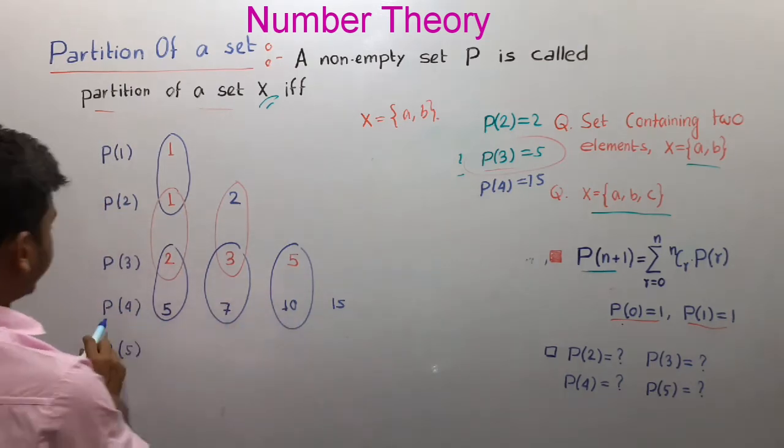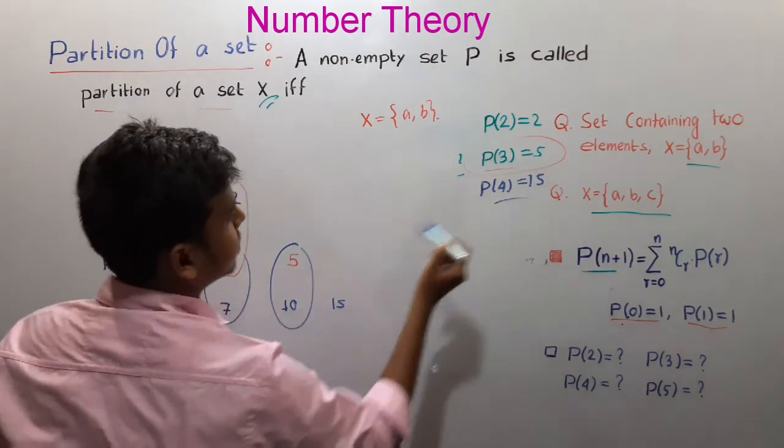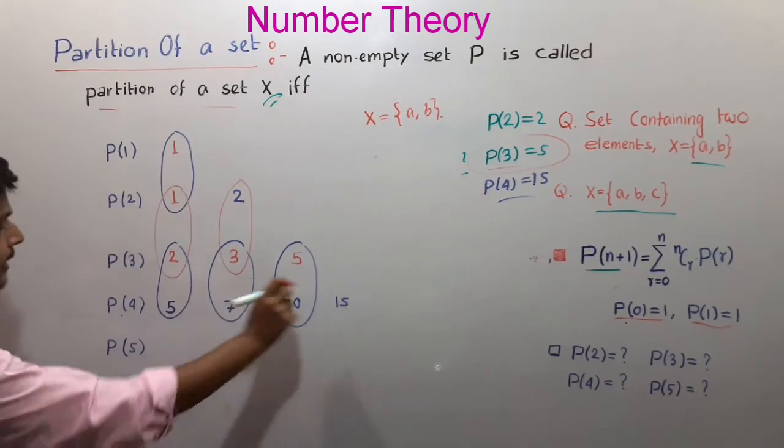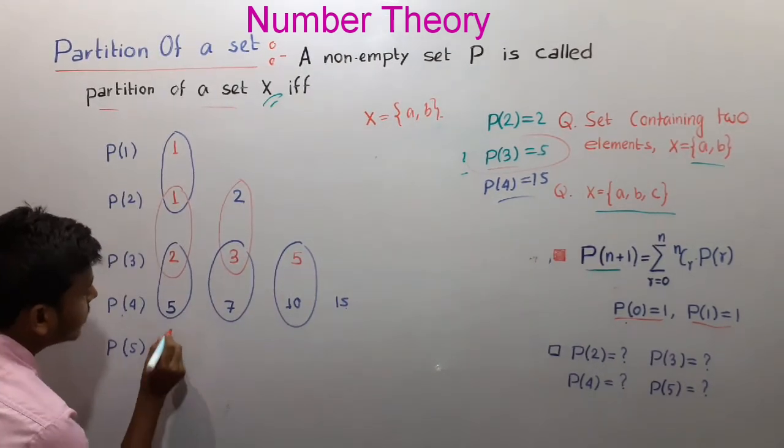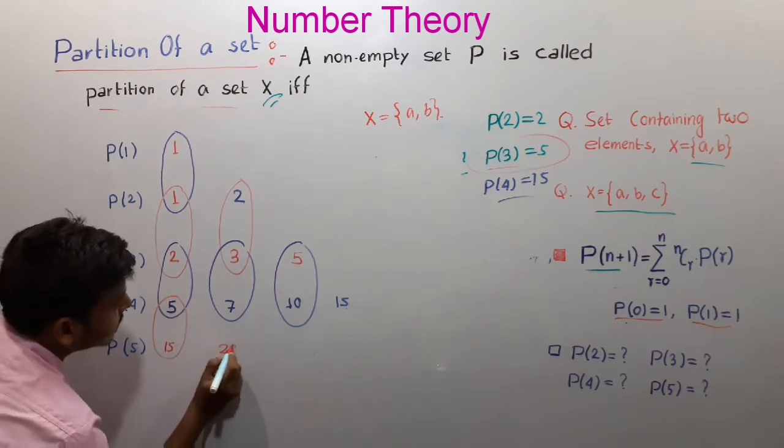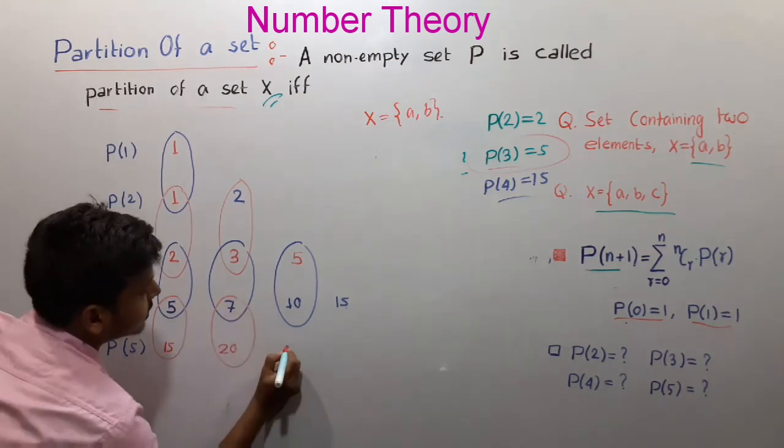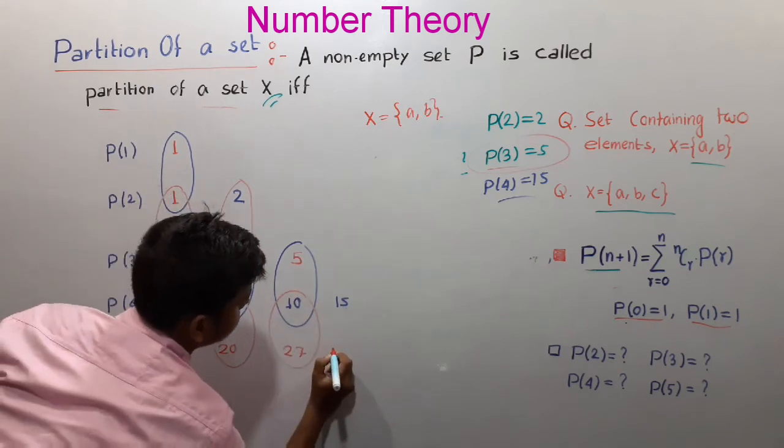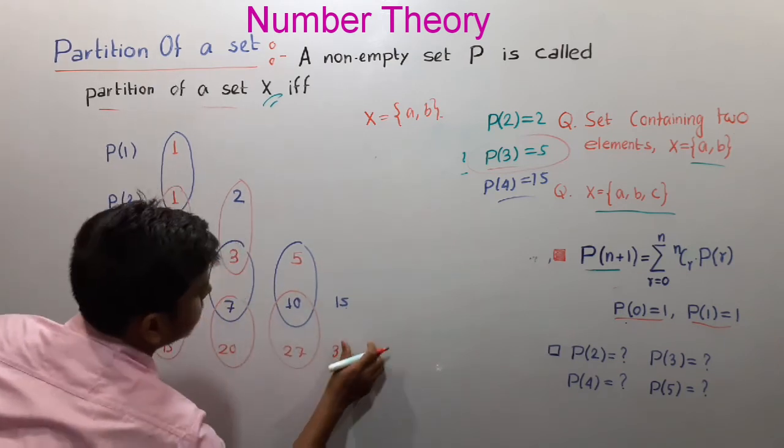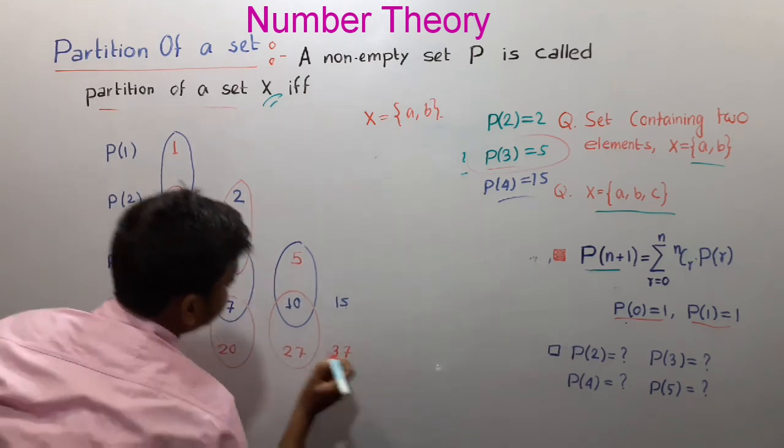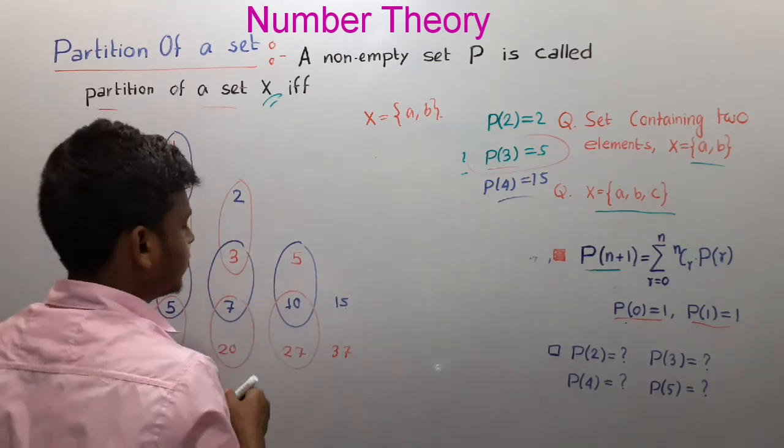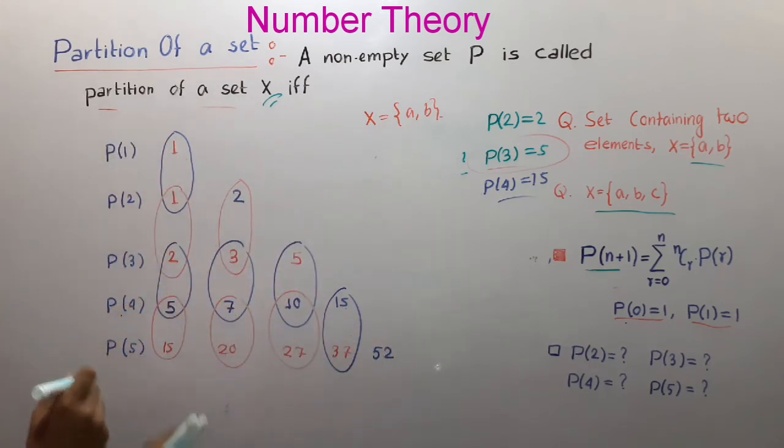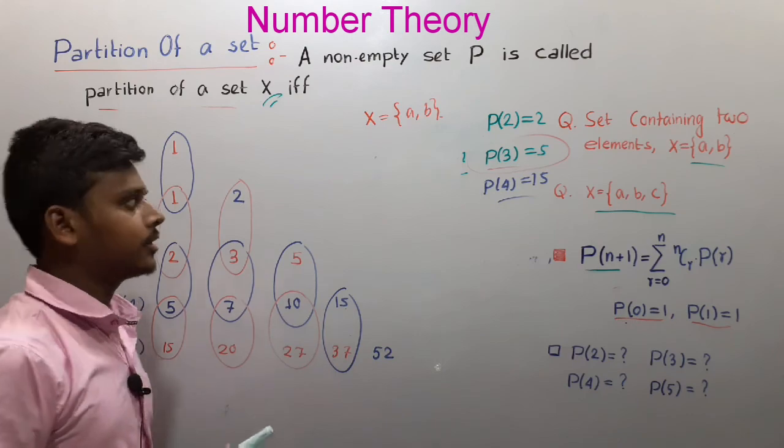So P4 is 15. P5 is calculated by 15. P5 plus 15 equals 52. So 52. So P6, P7, P8, calculate both.